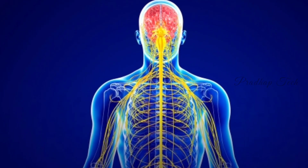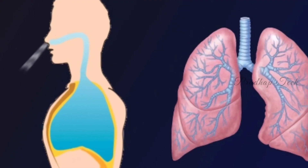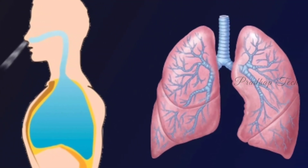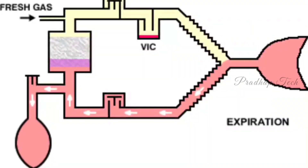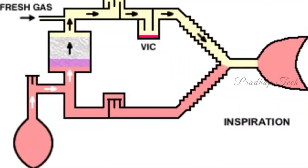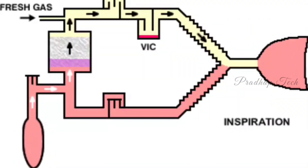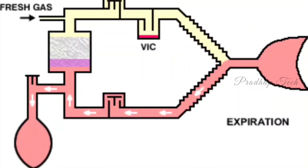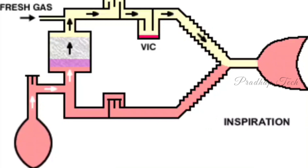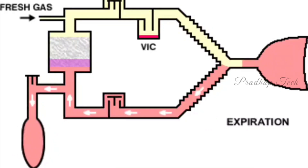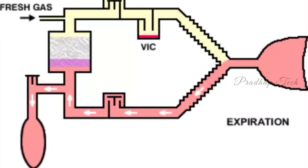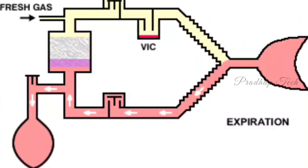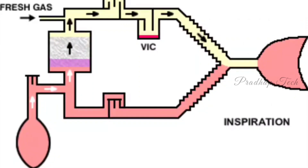Elimination: during exhalation, this mixture comes out. To reduce theater pollution, these gas mixtures are reused and carbon dioxide is absorbed by the carbon dioxide absorber. For this process, a special circuit called a closed circuit is used. This is how an anesthesia machine works.